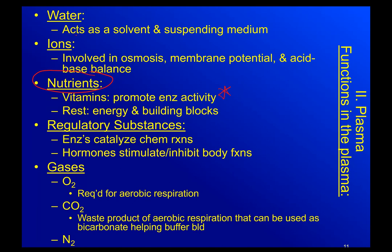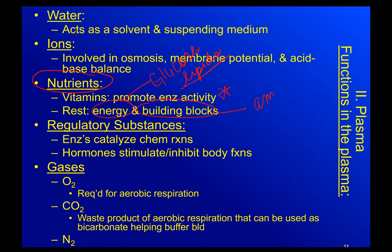The rest of our nutrients — glucose, proteins, and lipids — are either energy sources or building blocks. Glucose and lipids that we absorb as nutrients are mostly broken down to make energy, giving our body the fuel it needs to carry out life processes. Amino acids, on the other hand, are the building blocks of proteins.